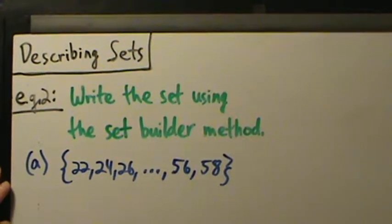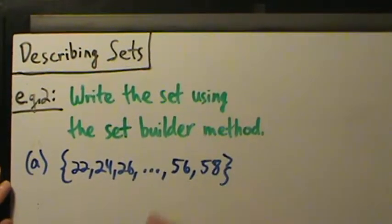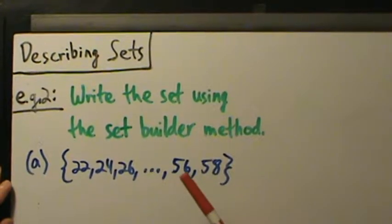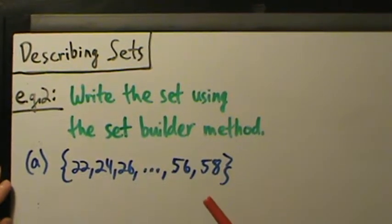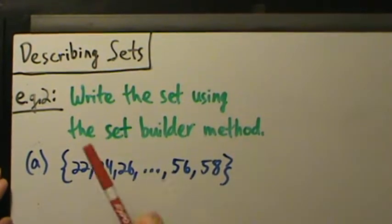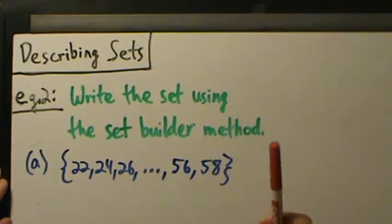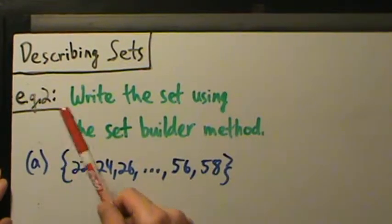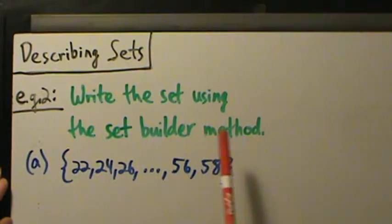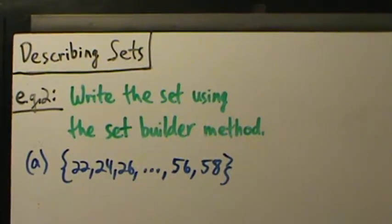So now in this video, we have a couple of sets given in the listing method, and we want to express them using set builder notation, or the set builder method. So example two: write the set using the set builder method.